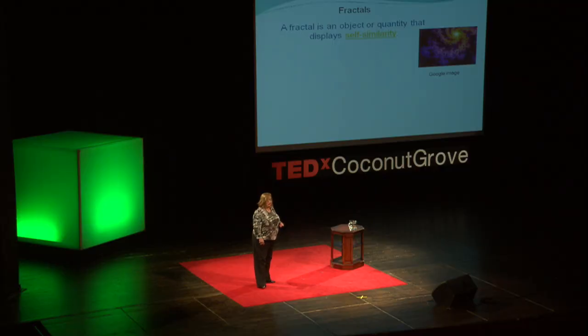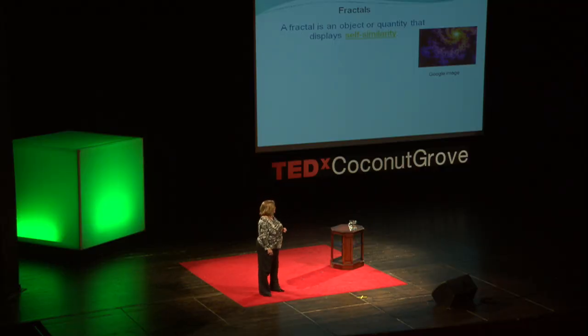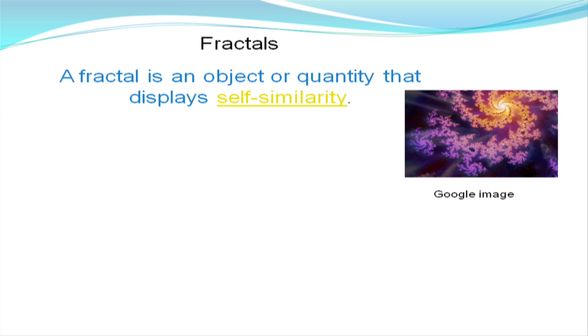The idea of being able to expand and go to infinity lends itself to a relatively new area of mathematics called fractals. What is a fractal? A fractal is any object or quantity that has this self-similarity feature — by that I mean if you look at any one part of the object, you see the whole object.